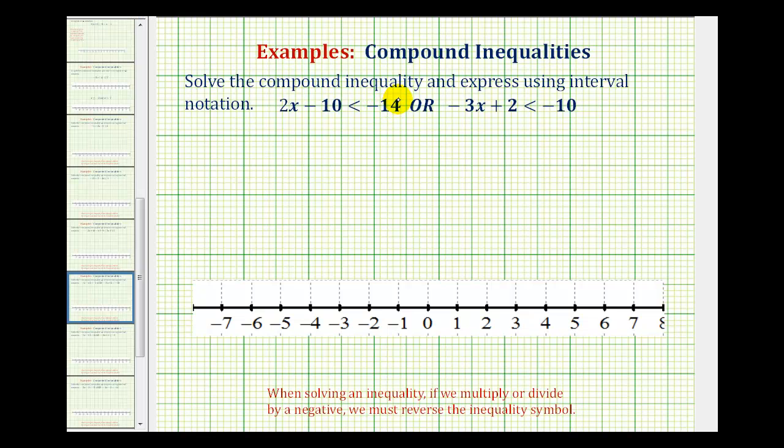We want to solve the compound inequality and then express the solution using interval notation. Our compound inequality consists of two inequalities connected by the word or, which means the solution will consist of all the values that satisfy this inequality, as well as all the values that satisfy the second inequality. So we're going to solve and graph both of these and then graph both solutions on the same number line to interpret the results.